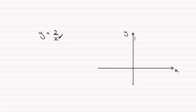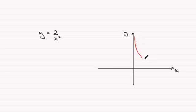And when x gets larger, then 2 divided by a very large number is going to tend towards 0 but still stay positive. So what's going to happen is the graph is going to look something like this.